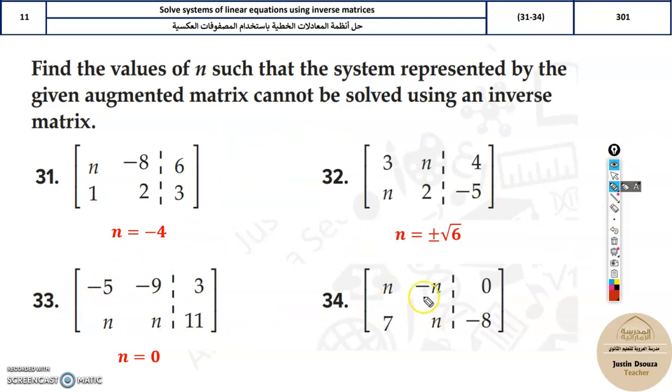For problem 34, which has 3n, it will be n squared minus 7n equals 0. If solving directly, you can factor out n, remaining with n plus 7 equals 0. So either n equals 0 or n equals negative 7.